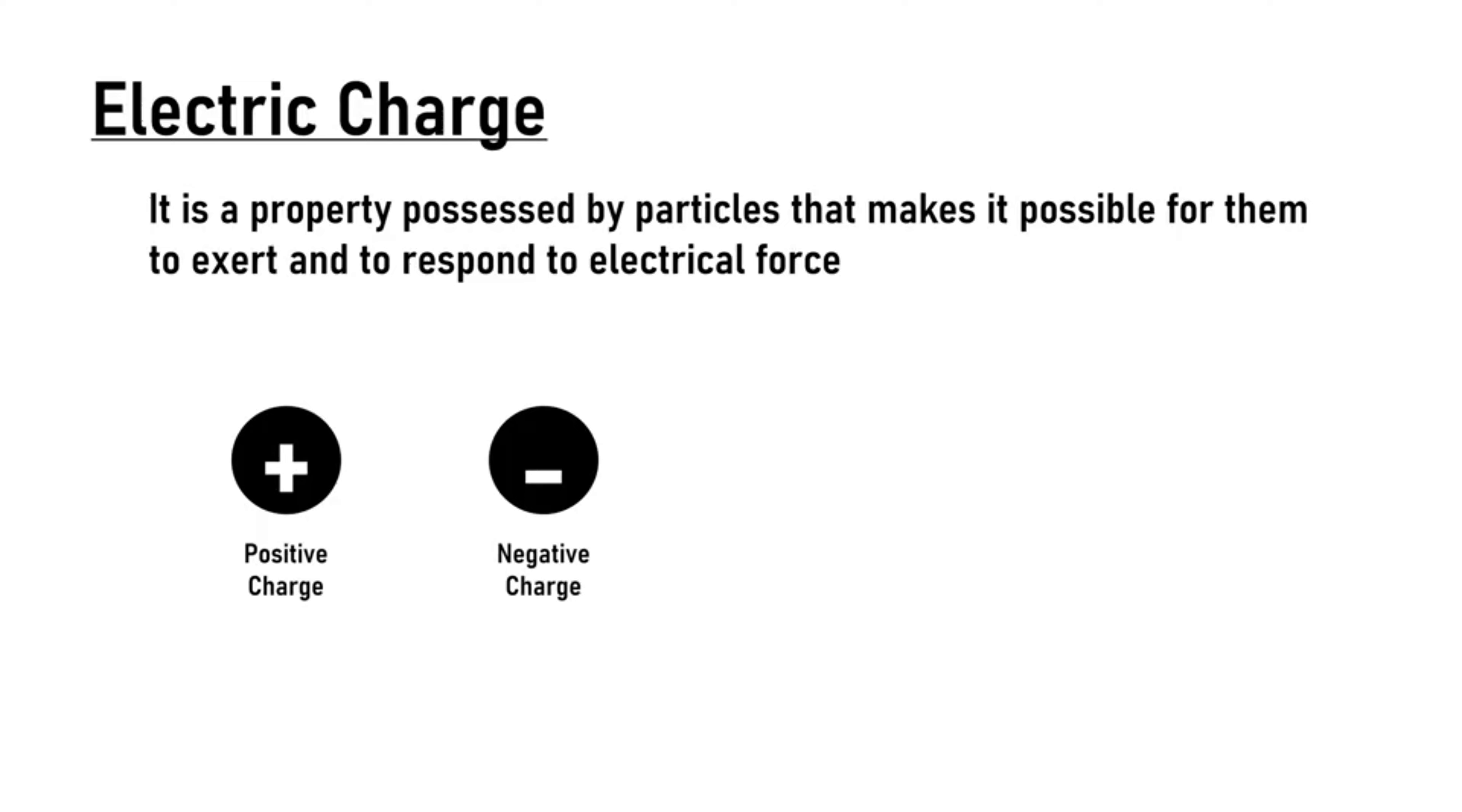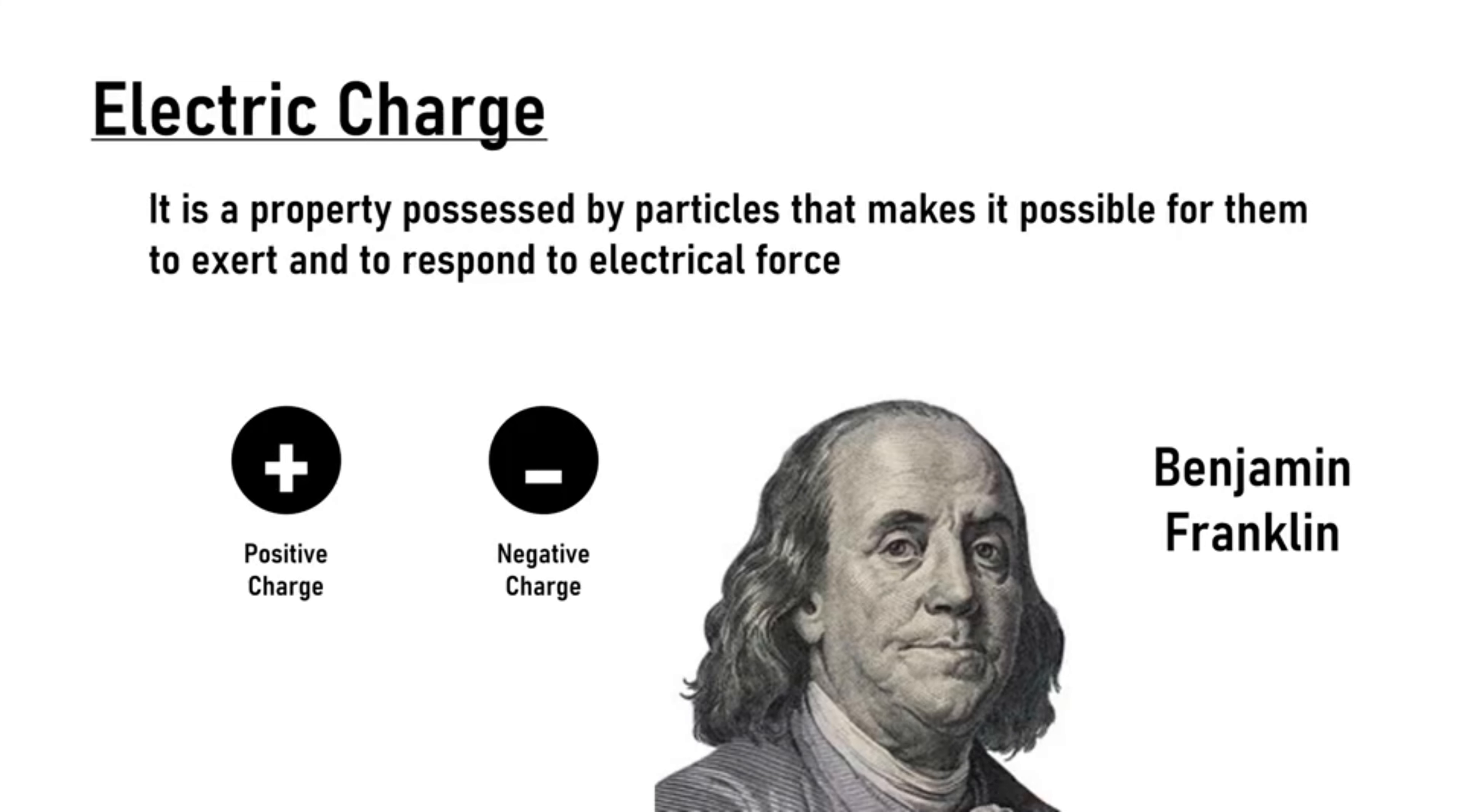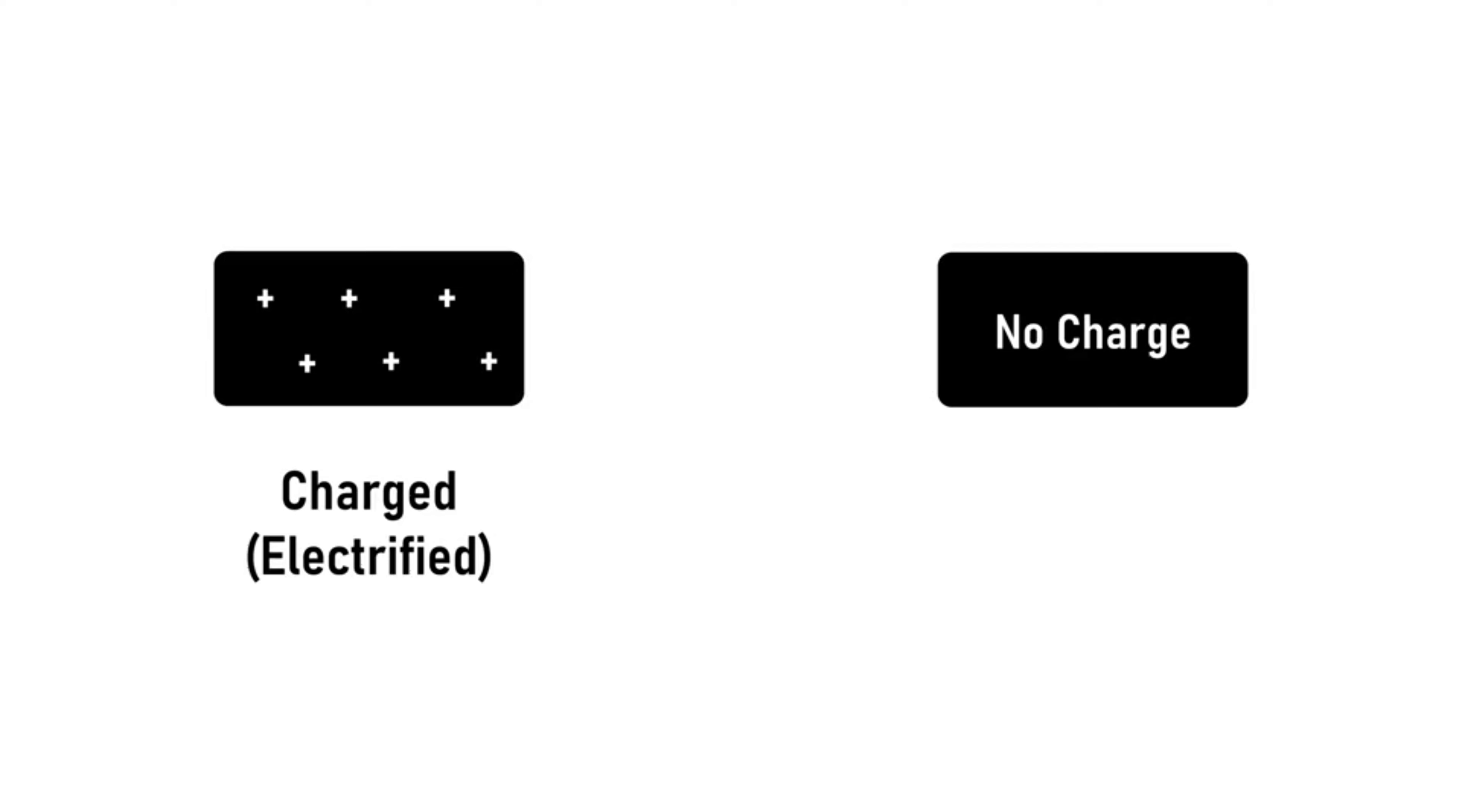These are named by the scientist Benjamin Franklin. If a body possesses charges on it, it is said to be a charged body, or we can call it an electrified body. And if a body doesn't possess any charge on it, then it is said to be a neutral body.